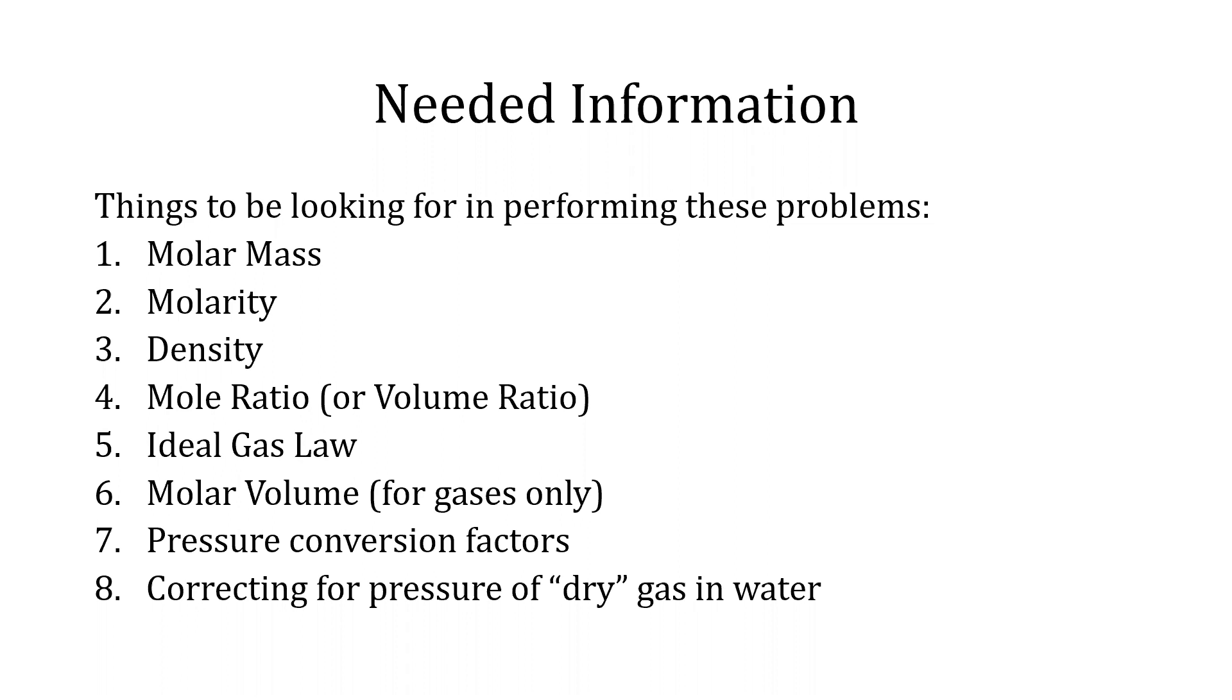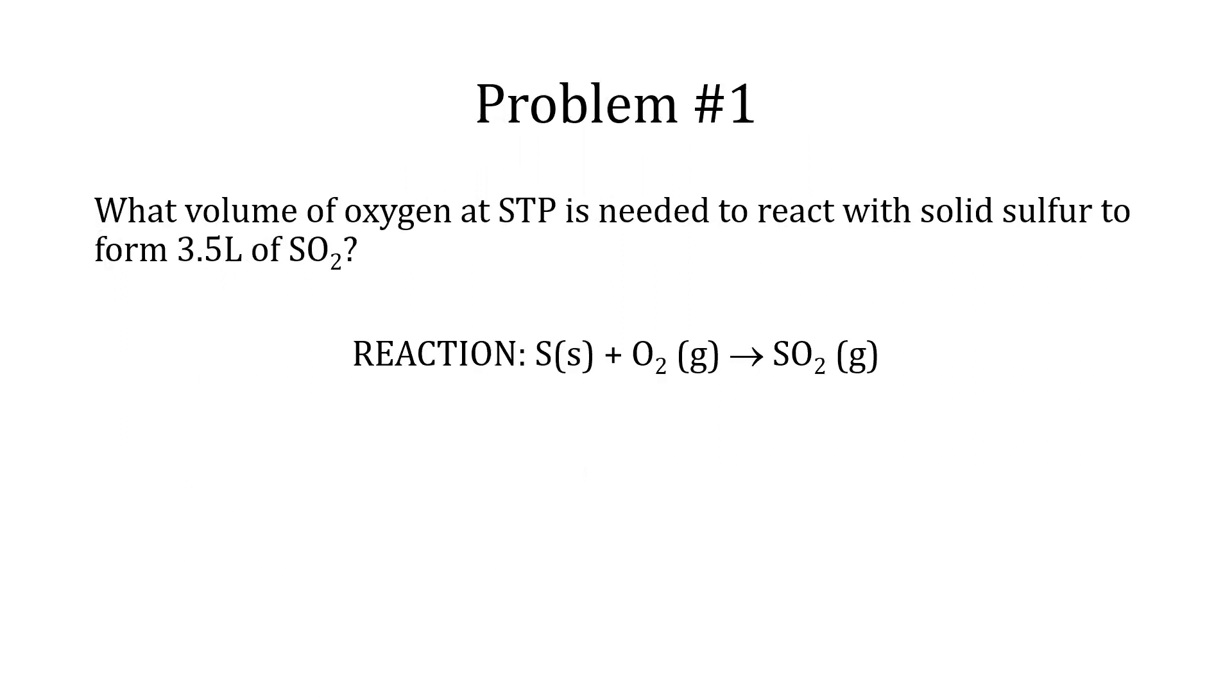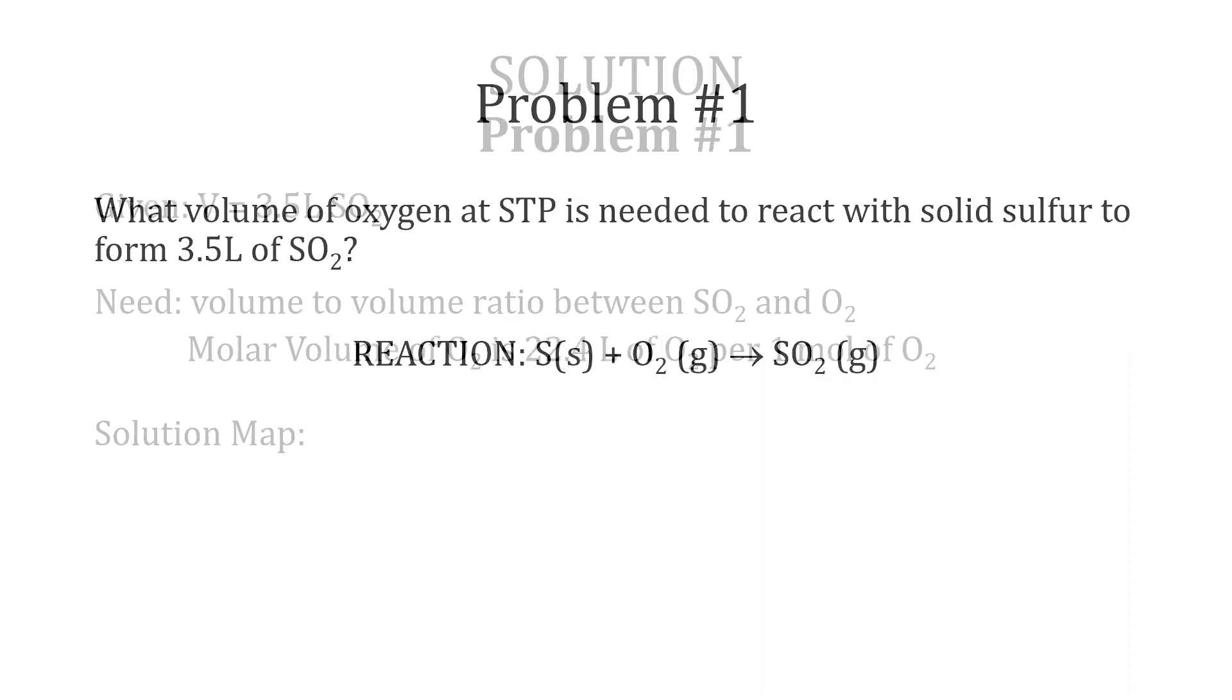Let's look at some examples. Problem one is: what volume of oxygen at STP is needed to react with solid sulfur to form 3.5 L of SO2? The reaction is S plus O2 forms SO2.